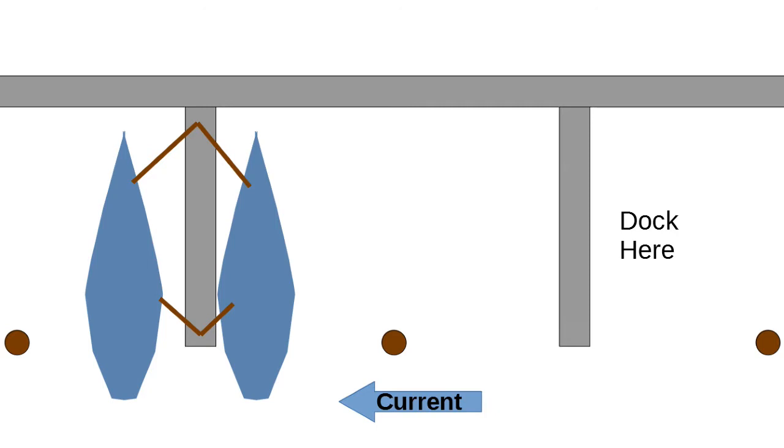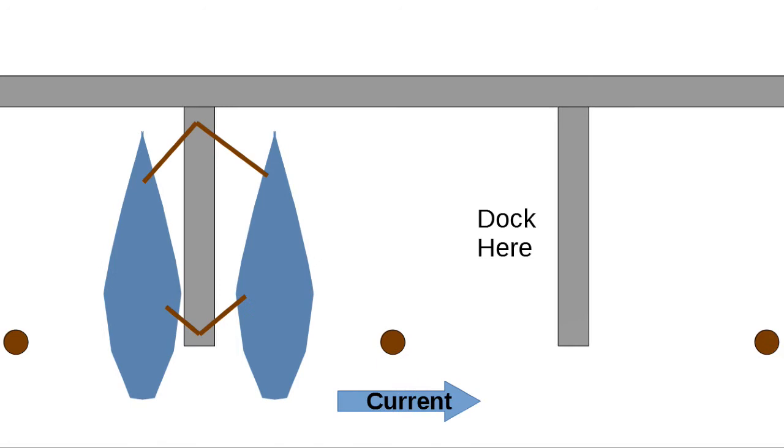If the boats are being pulled to port, then you want to pick a slip so that the current pushes you into the slip. You'll be tying up port side. And of course the opposite is true. If the boats are being pushed to starboard, then pick a slip where you can tie up on your starboard side.